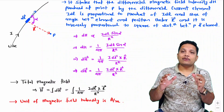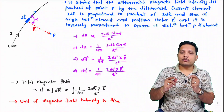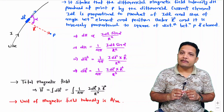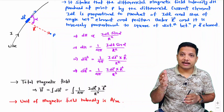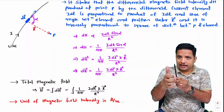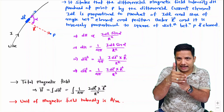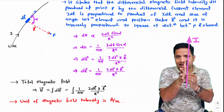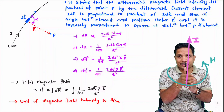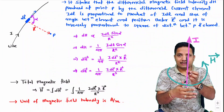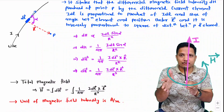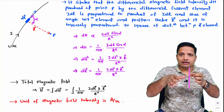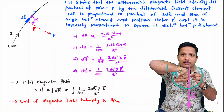Now let us understand the direction of magnetic field intensity. Remember: whenever you want to find the direction of magnetic field intensity, you apply the right-hand thumb rule. Your thumb points in the direction of current flow in the wire, and the curling of your fingers gives the direction of the magnetic field. If current passes upward, the magnetic field circles in one direction; if current passes downward, the magnetic field circles in the opposite direction.